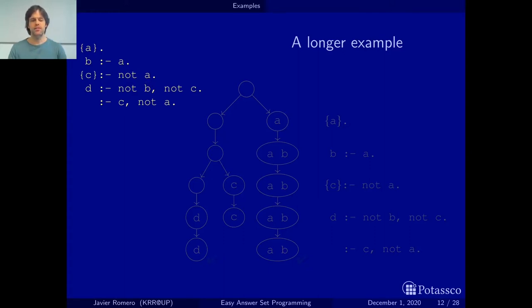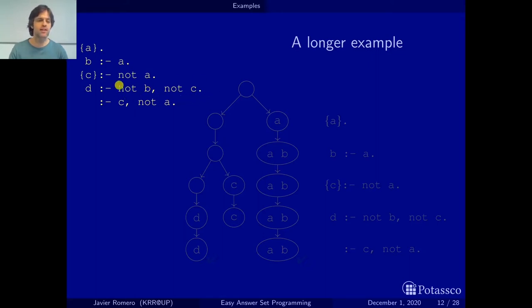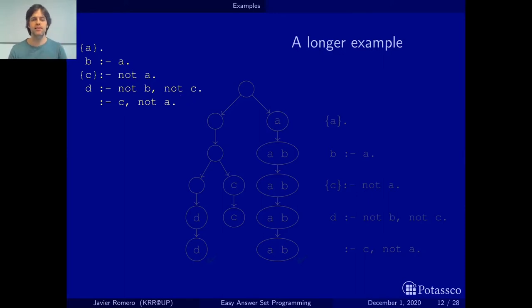There are especially two things to note here. The first is that in this example we may have more than one literal in the body — still only two — but with this, you get the idea that you can have as many literals in the body as you want. Here we have not B, not C, and here C and not A.